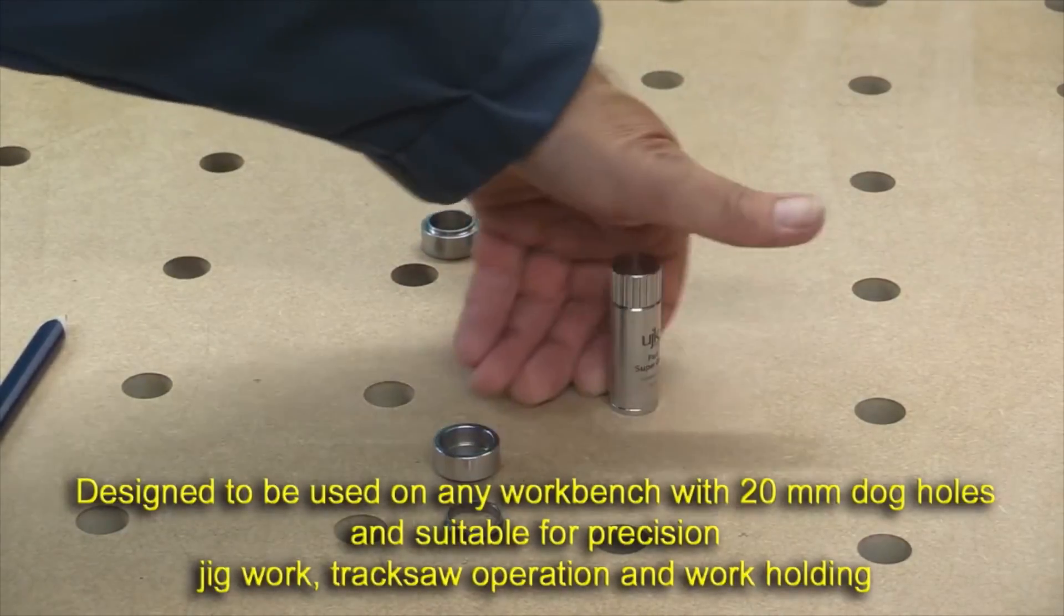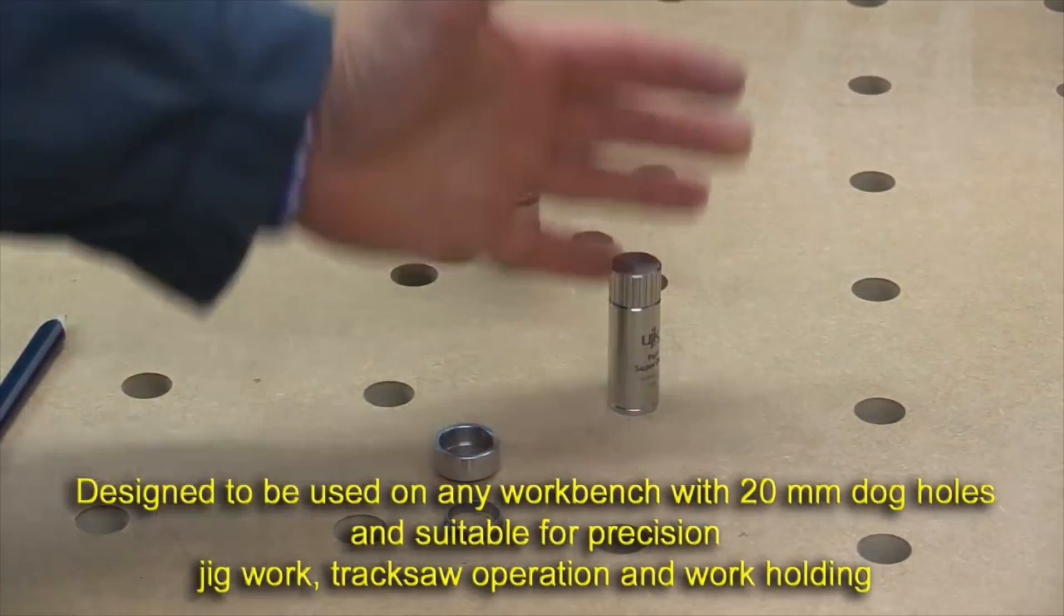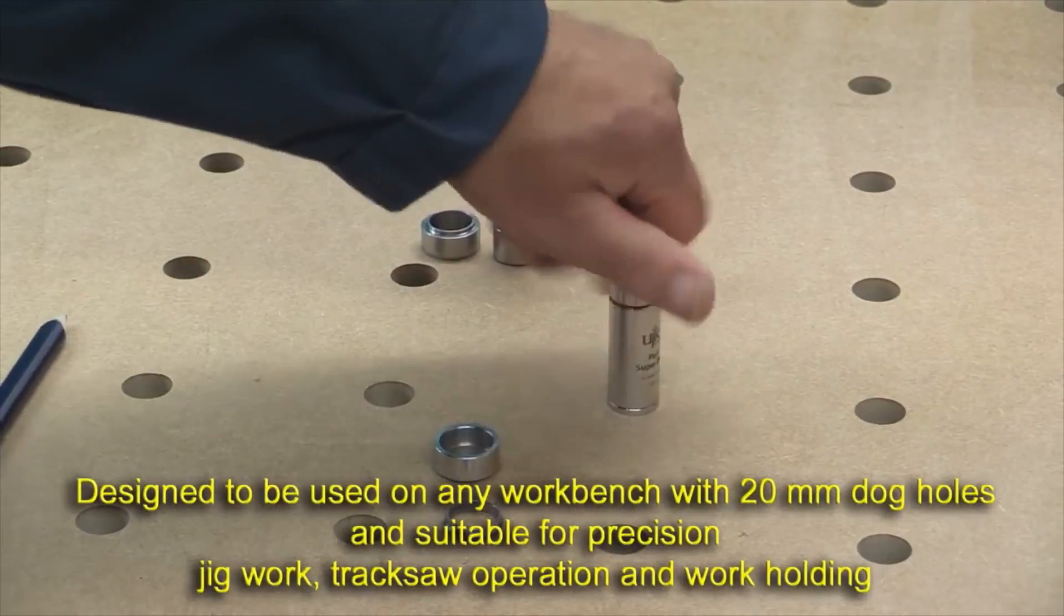completely plain shaft, nothing to get in the way. You can put your guide rail against any part of this, you can use this for jig work in so many different ways.